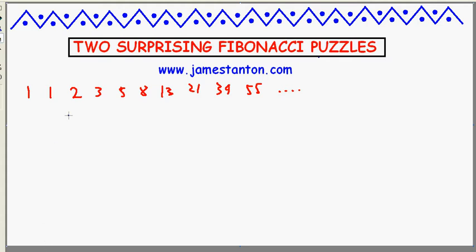Okay, first puzzle. My first puzzle is about a very strange language, which I call the language of Bieber. And in this language, there's only three letters of the alphabet ever used: A, B, and E. And most any combination of those three letters is indeed a word in this language, except there's one rule. You may never have an E immediately following an A.